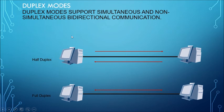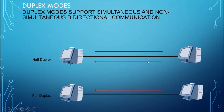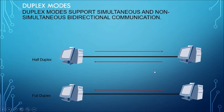In duplex modes, there is half duplex and full duplex. In half duplex, for example, the sender side can share communication to the receiver side, but at that moment the receiver cannot send back to the sender. Only after the sender finishes can the receiver send a message — so only one communication direction at a time. In full duplex, there is simultaneous communication from both the sender side and receiver side at the same time, as shown by both arrows communicating simultaneously without interruption.